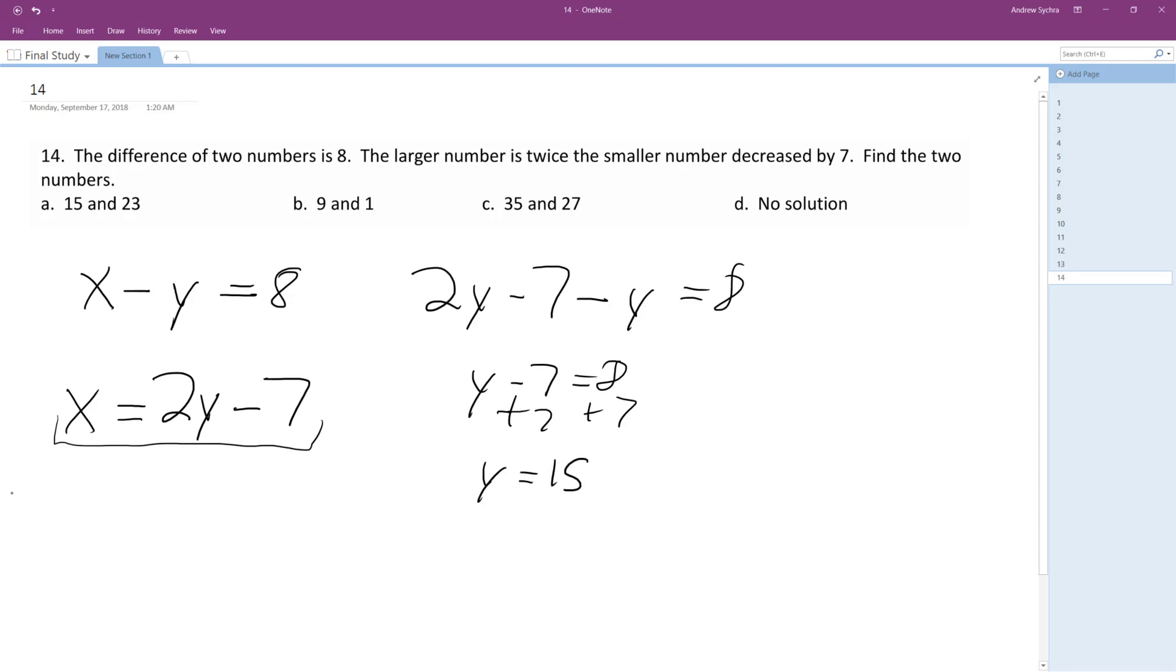So we'll plug in y equals 15 to the second equation. So x is equal to 2 times 15 minus 7, we get x is equal to 30 minus 7, which is equal to 23.